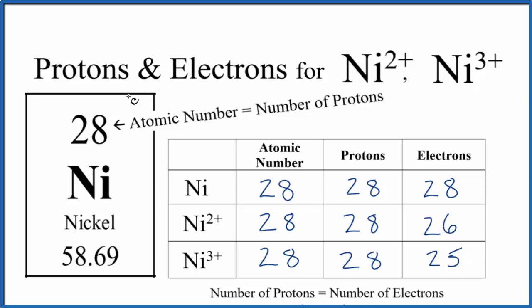So that's how you find the protons and electrons for Ni2+, Ni3+, and neutral nickel. If you need help finding the number of neutrons for the isotopes of nickel, there's a link in the description of this video. This is Dr. B, and thanks for watching.